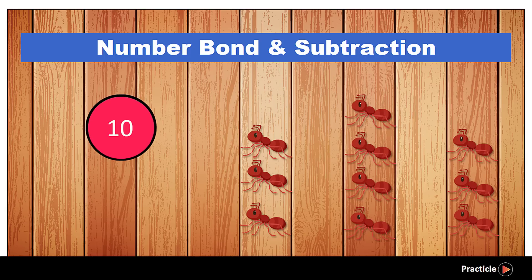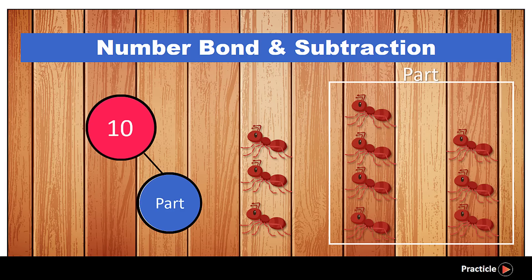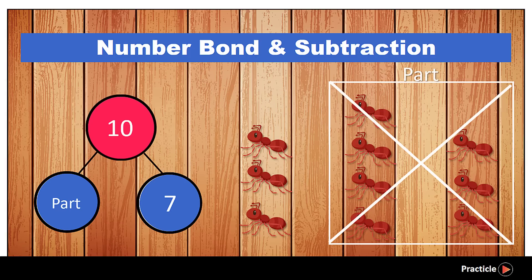We know that we have 10 ants at first. Then what happens? We got rid of one part of the ants, which is made up of 7 ants. And that's how we are left with the other part, which happens to be the missing one.